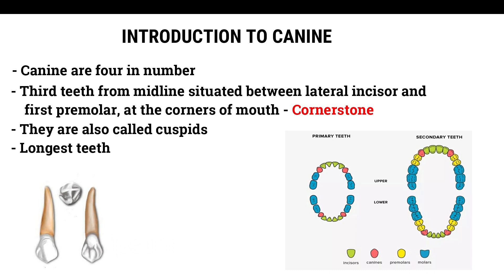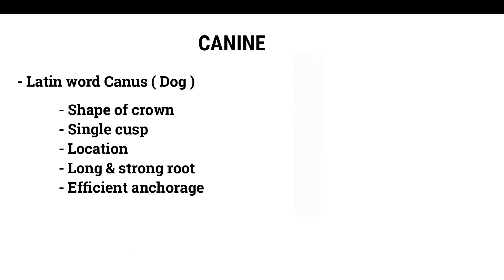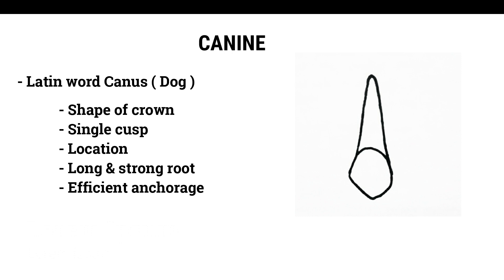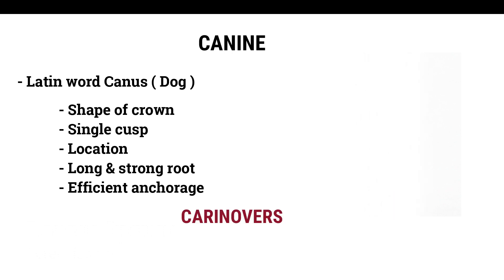Canines are the longest teeth in the dental arch. The word canine is derived from the Latin word for dog, canis, because these teeth resemble a dog's teeth. That is, the shape of the crown, single cusp, its location, long and strong roots, and efficient anchorage had great resemblance with the carnivore's teeth.